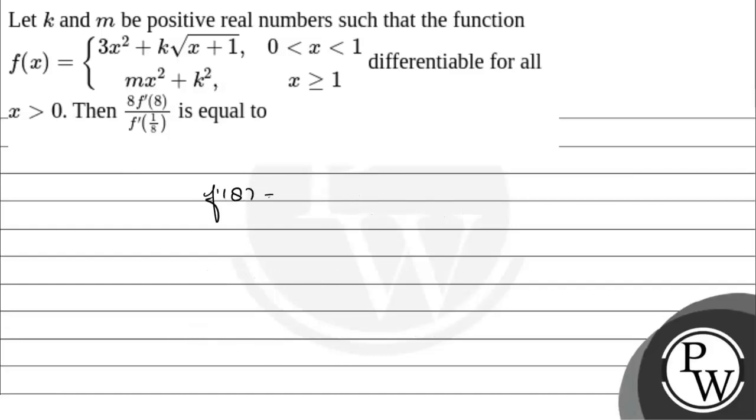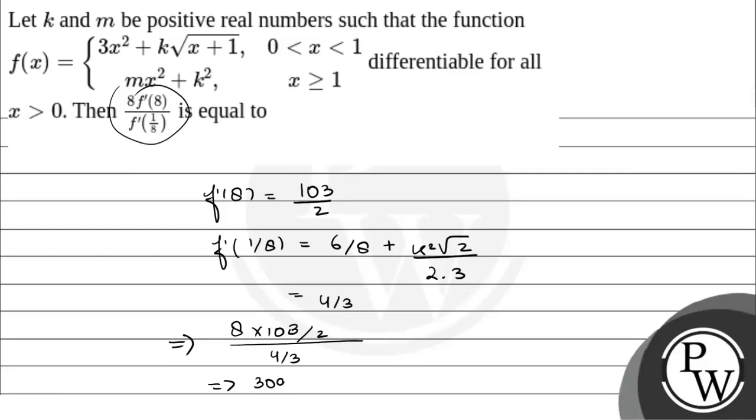Now f'(8) equals 2m = 3/2. And f'(1/8) equals 6(1/8) + k/(2√(1/8+1)·3) = 4/3. Now putting k value, we get 8·(103/32)/(4/3). Solving this, the answer is 309. So the correct answer equals 309. Hope you understood it well. Thank you.